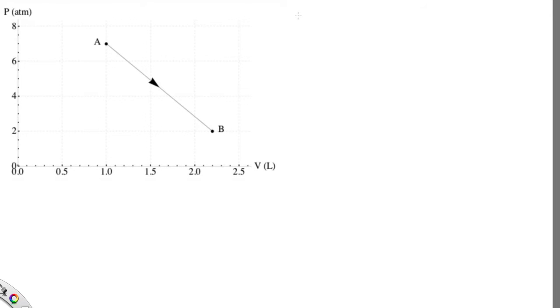The question asks us to calculate the work done as we go from A to B. We can see that in this case, the volume is going from 1 litre to 2.2 litres, and so this is an expansion.